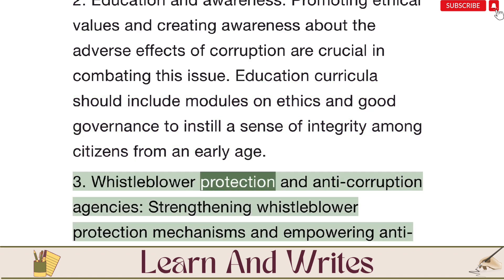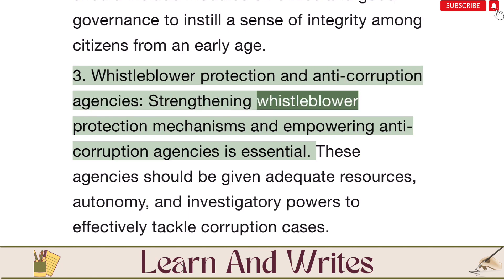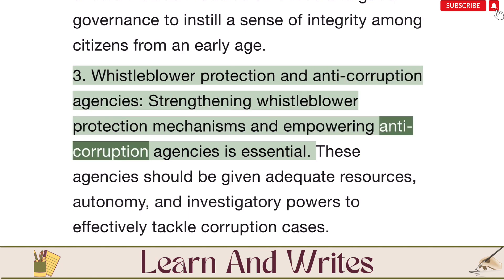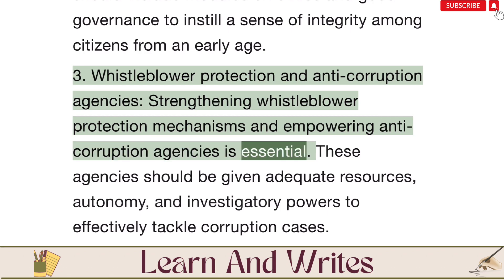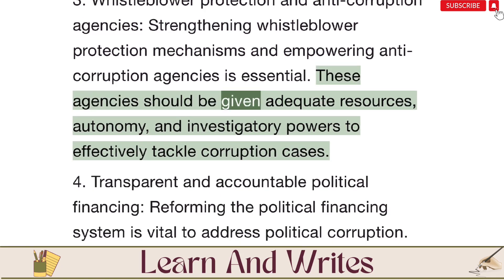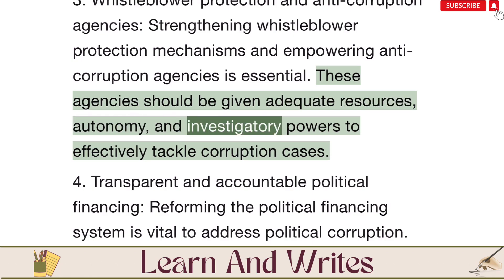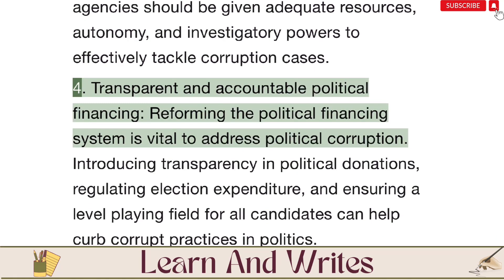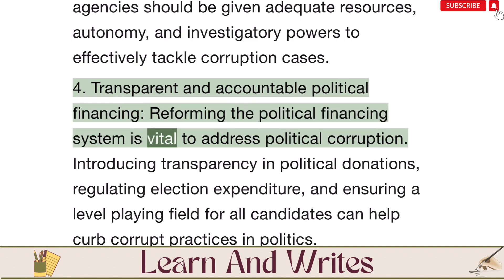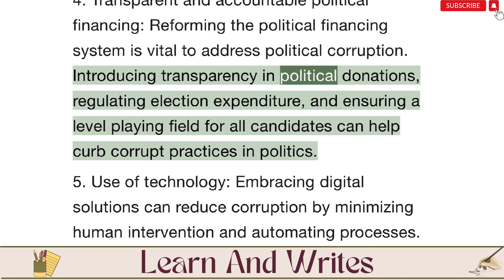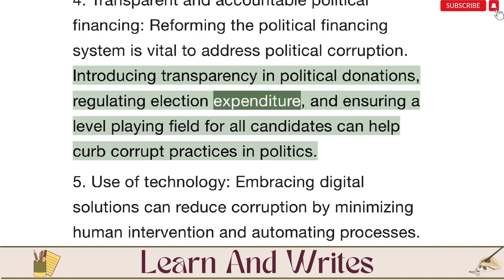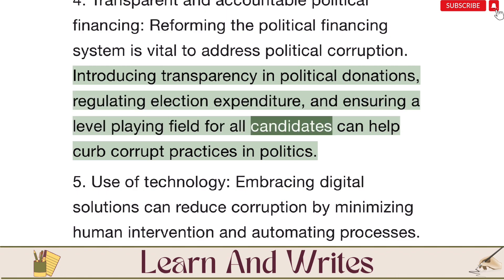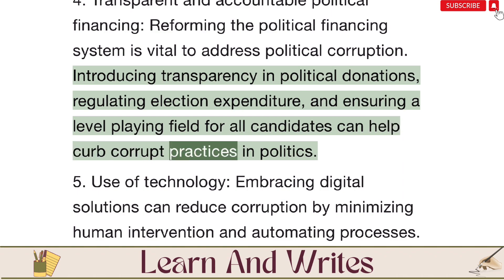Third, whistleblower protection and anti-corruption agencies: these agencies should be given adequate resources, autonomy, and investigatory powers to effectively tackle corruption cases. Fourth, transparent and accountable political financing: reforming the political financing system is vital to address political corruption. Introducing transparency in political donations, regulating election expenditure, and ensuring a level playing field for all candidates can help curb corrupt practices in politics.